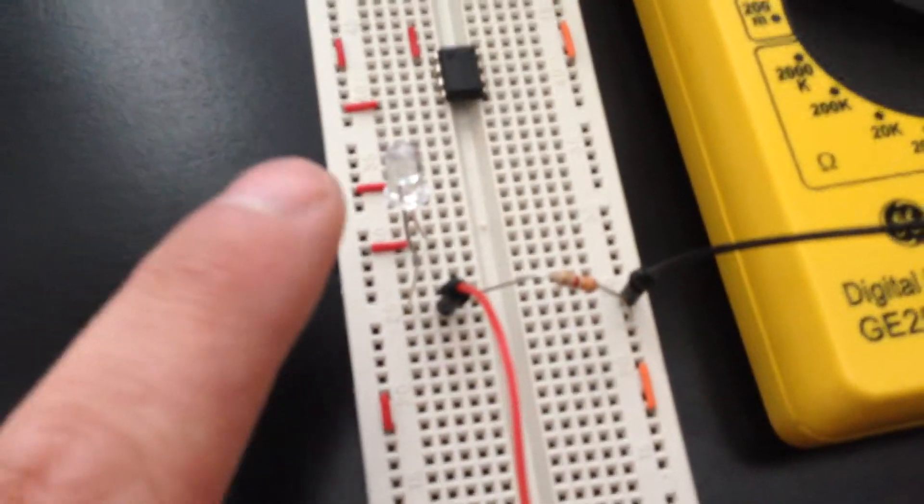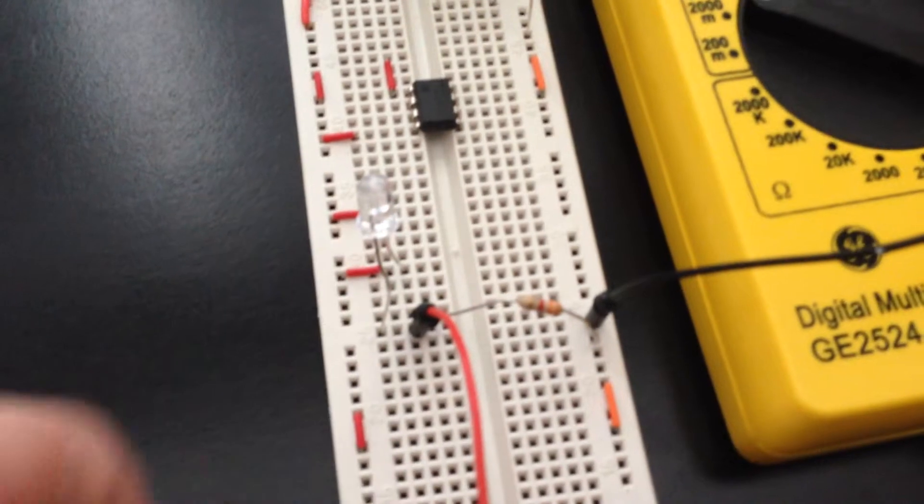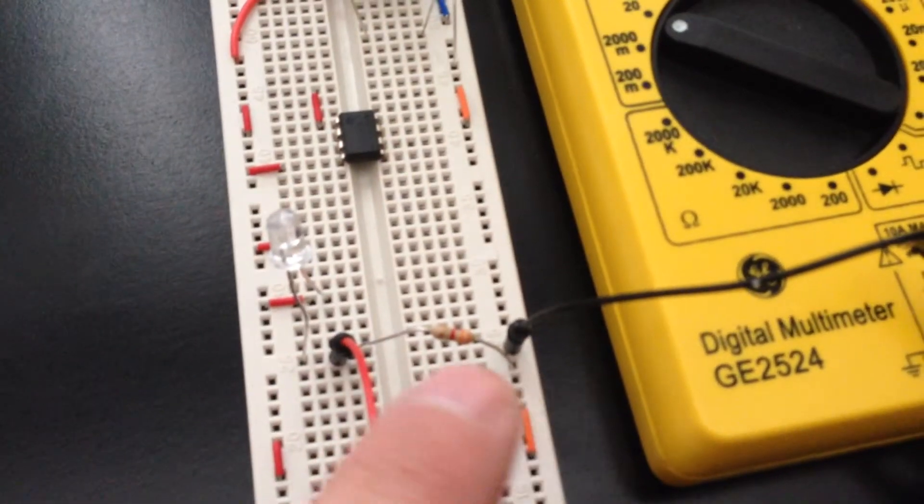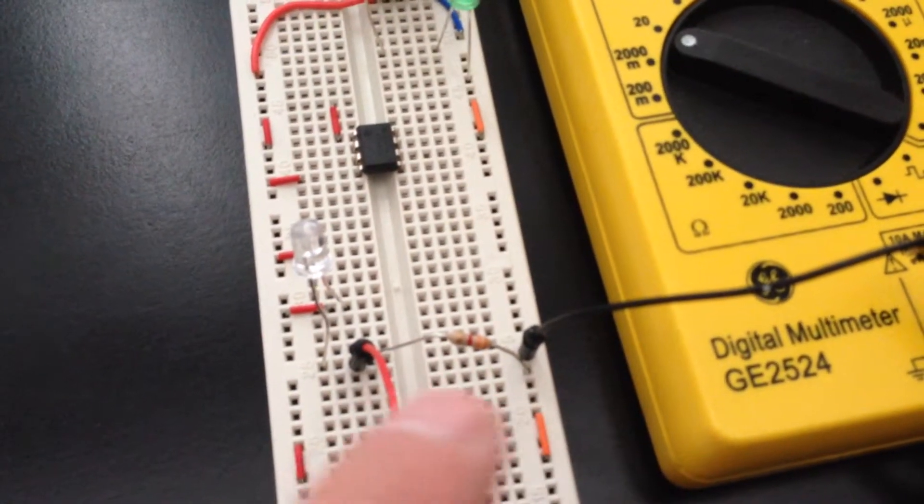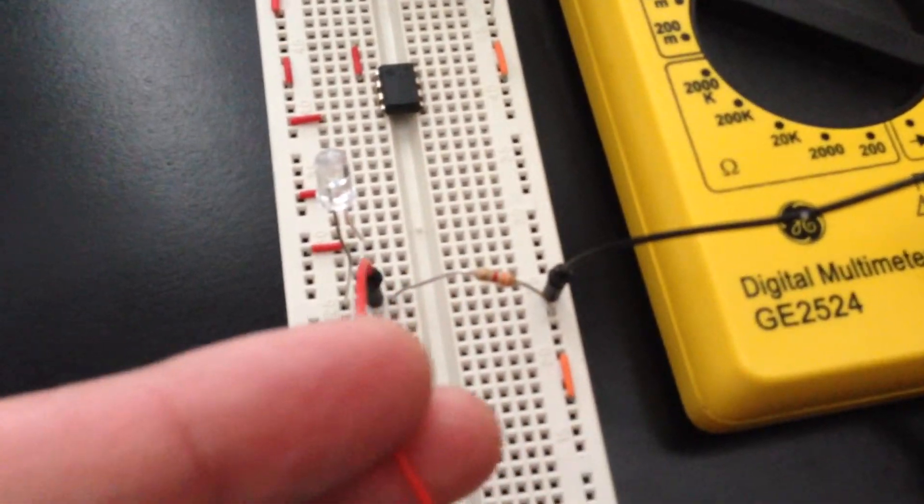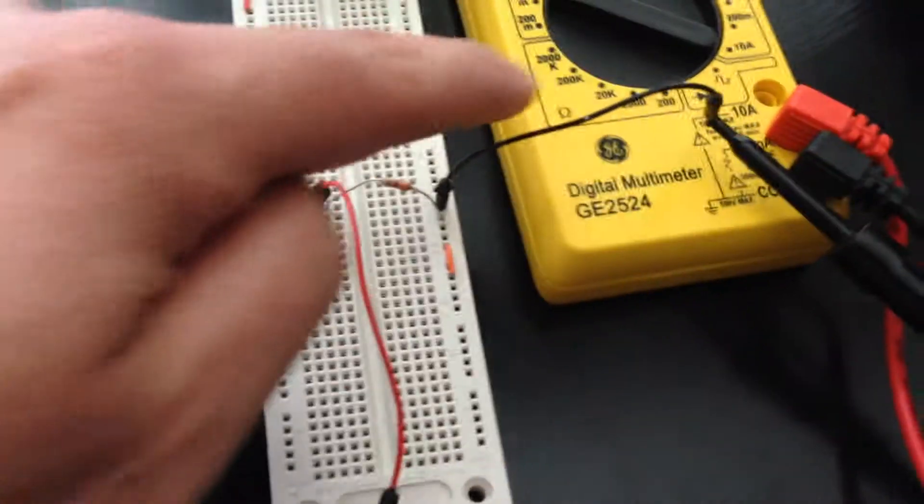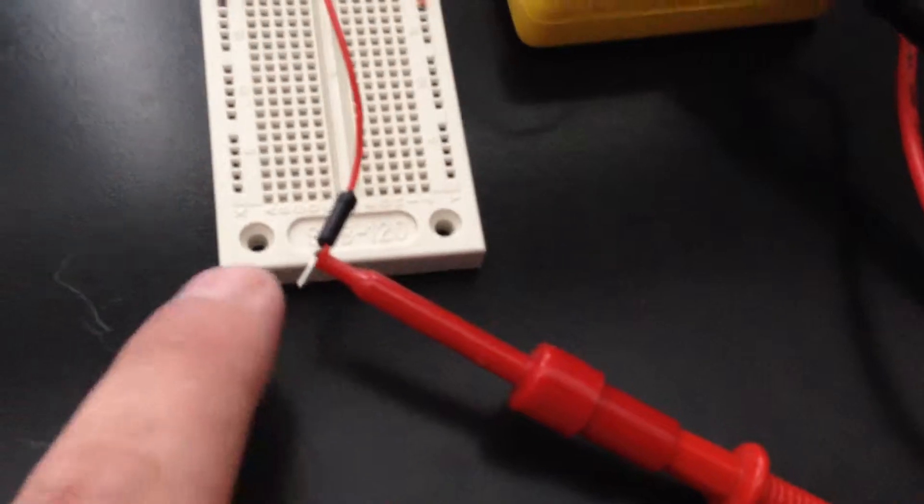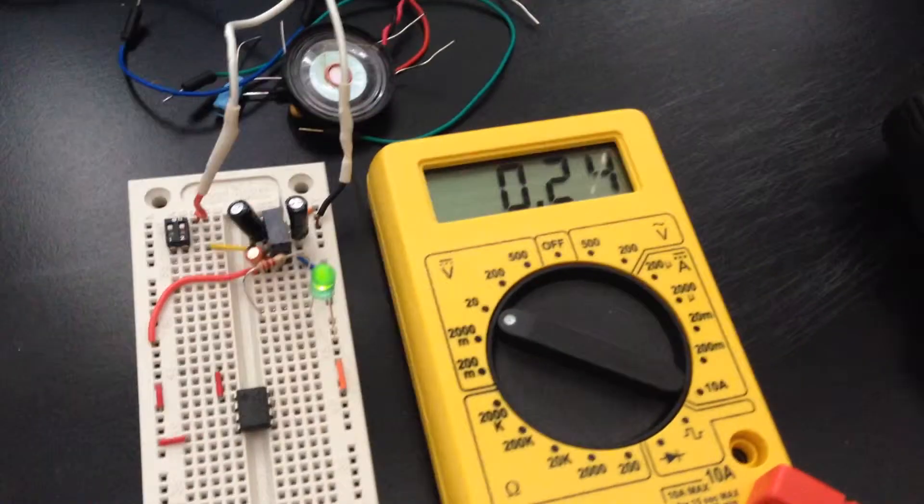Right now what I want to show you is I've got the phototransistor right here and a 3.3K resistor right here. Here is a red wire and a black jumper wire. I've got them connected to my multimeter here.